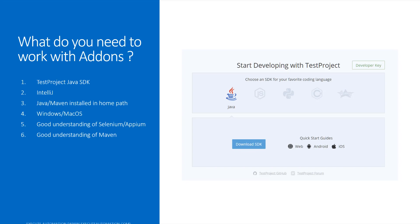We require the test project Java SDK, which you can download from the developer section on the right-hand side. We also require IntelliJ or Eclipse IDE, whichever is your choice. Additionally, Java and Maven must be installed in your home path. Make sure you have both installed. We also require a Windows or Mac operating system for the development environment.